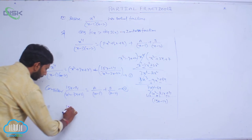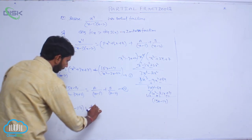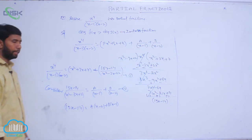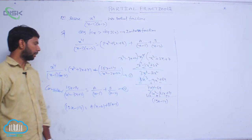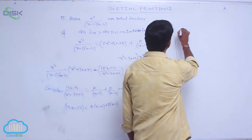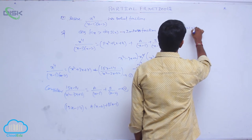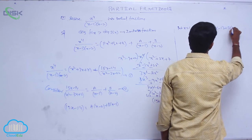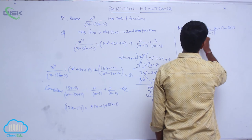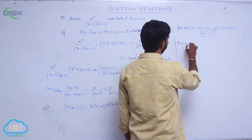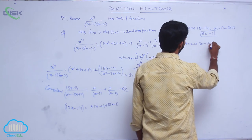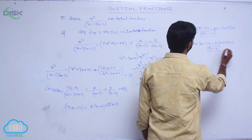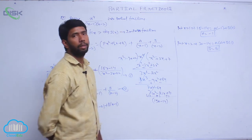Taking LCM on both sides: 15x minus 14 equals A(x minus 2) plus B(x minus 1). To find A and B: put x equal to 1, which gives 15 minus 14 equals A(minus 1) plus B(0), therefore A equals minus 1. Put x equal to 2, which gives 30 minus 14 equals A(0) plus B(1), therefore B equals 16.